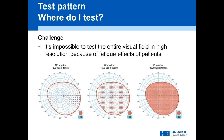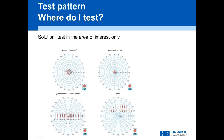Where should you test? Because it's virtually impossible to test the entire field — two-degree spacing of the full field gives 25,000 targets, even 10-degree spacing gives almost 200 targets with poor resolution — we really test in the area of interest only. That's the answer to what test pattern to use. You should always ask yourself where your area of interest is, then compromise based on that.